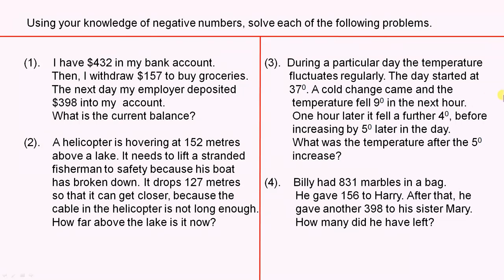Example three: During a particular day, the temperature fluctuates regularly. The day started at 37 degrees. A cold change came and the temperature fell 9 degrees in the next hour. One hour later, it fell a further 4 degrees before increasing by 5 degrees later in the day. What was the temperature after the 5 degree increase? This involves negative numbers and is another very practical everyday example.